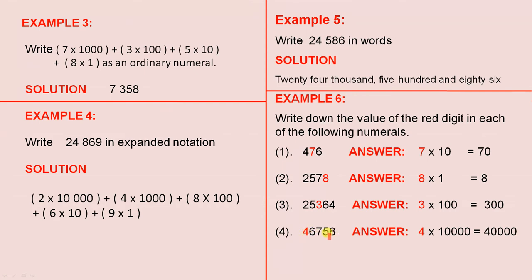the 4, units, tens, hundreds, thousands, 10,000. 4 times 10,000 is 40,000.